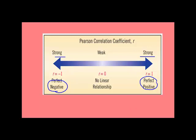Those that are in the center, meaning r equals 0, meaning there is no linear relationship between the two variables. That would be weak.